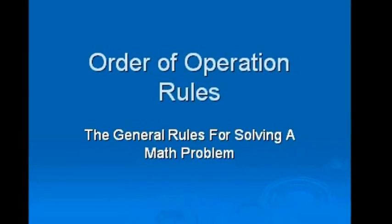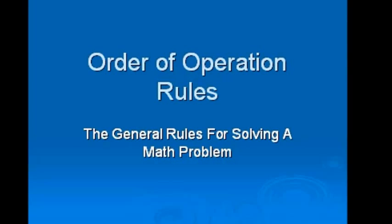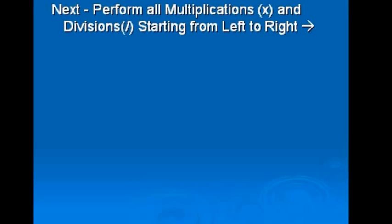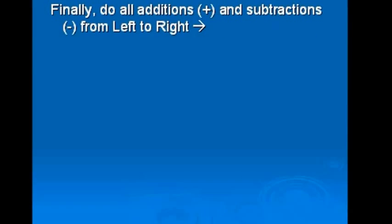I want to share with you what I call the order of operation rules, and that's the general rule for solving this type of problem. The first thing we do, we move from left to right, simplifying all numbers with an exponent. Next, we perform all multiplications and divisions starting from left to right. And finally, we do all additions and subtractions again from left to right.